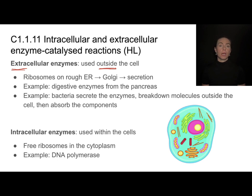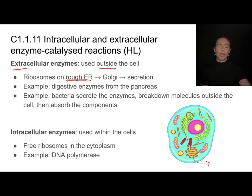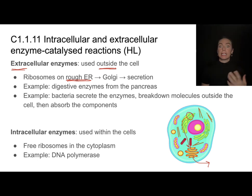Extracellular enzymes are produced on ribosomes on the rough ER. Those ribosomes produce the enzymes, which then travel by vesicles to the Golgi and are exported out of the cell. A great example is pancreatic cells — they produce digestive enzymes, or even bacterial enzymes like saprotrophic bacteria that break down materials outside the cell.